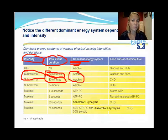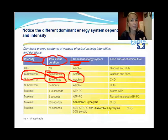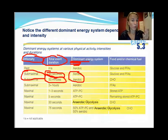To recap, what determines which energy system is dominant is the intensity of the exercise, the duration of the exercise, whether or not oxygen is available, and whether or not fuel is available.